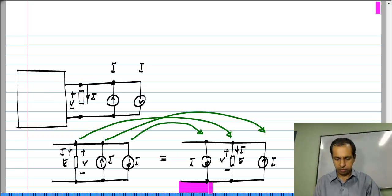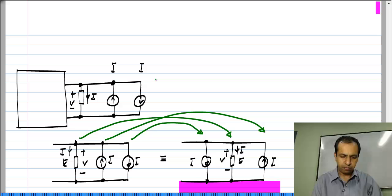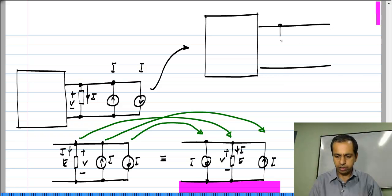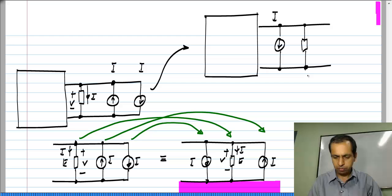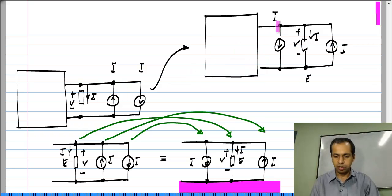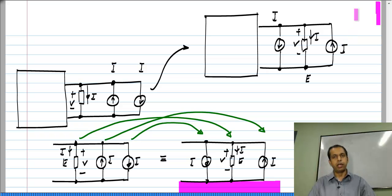I can now redraw the complete circuit with this new arrangement instead of the original one. The circuit changes to one where I draw the current source of value I first, then the element E with a voltage V across it and a current I through it, and the other current source I pointing upwards. There will be absolutely no change when you go from one to the other — all voltages and currents through all elements remain exactly the same. I have just changed the way I drew the three parallel elements.